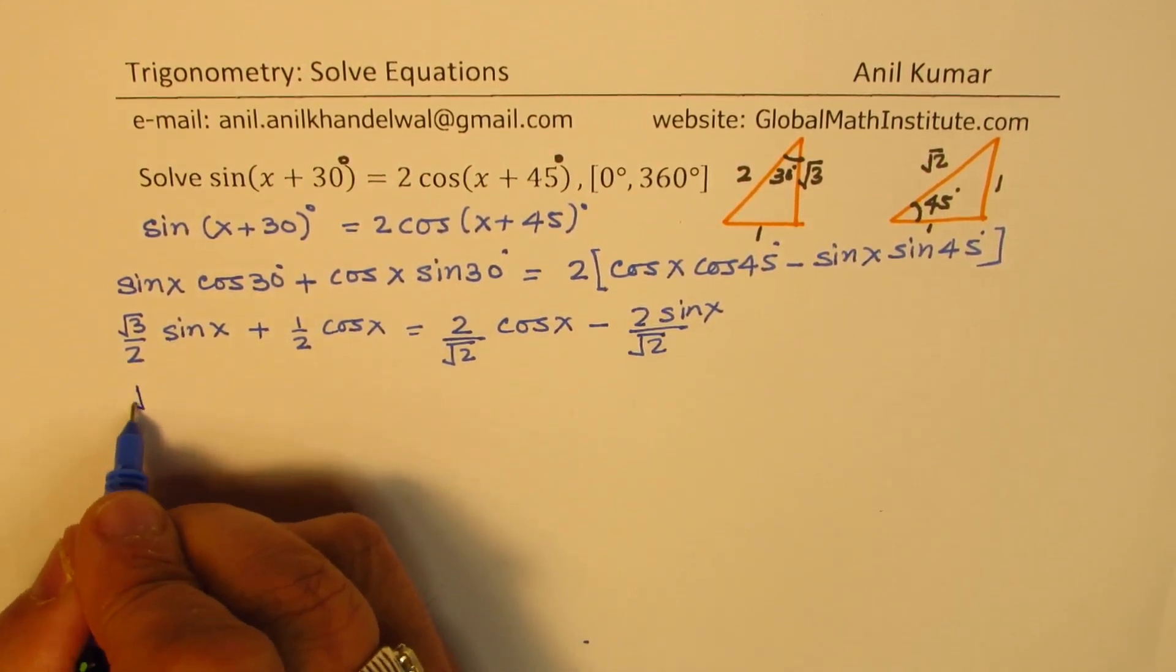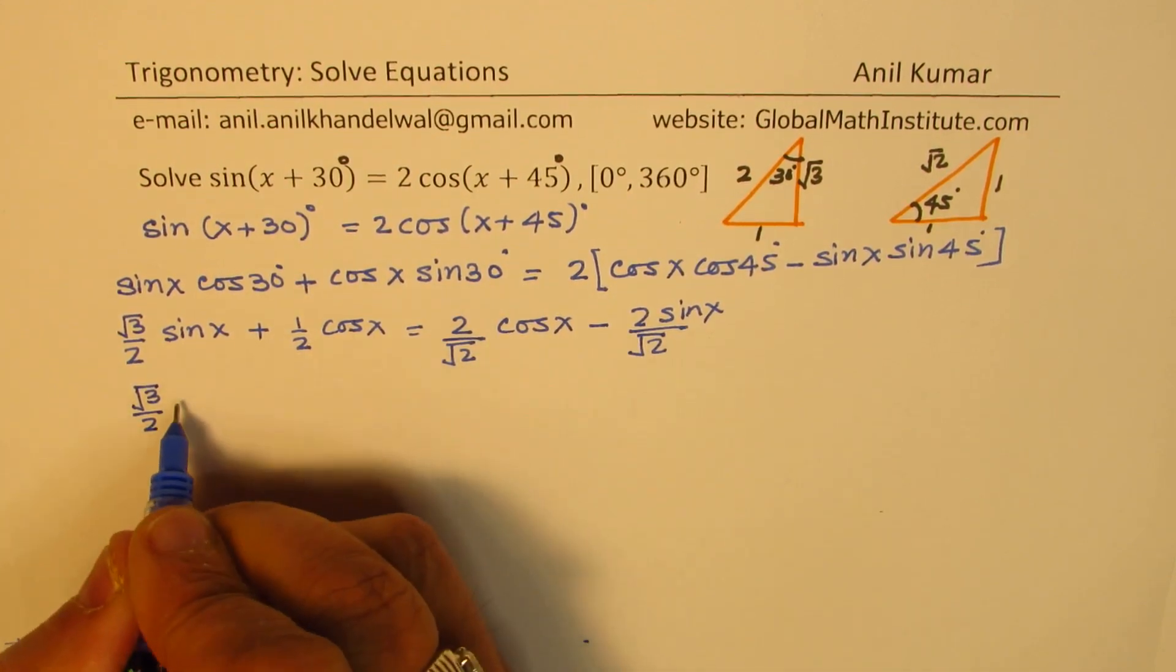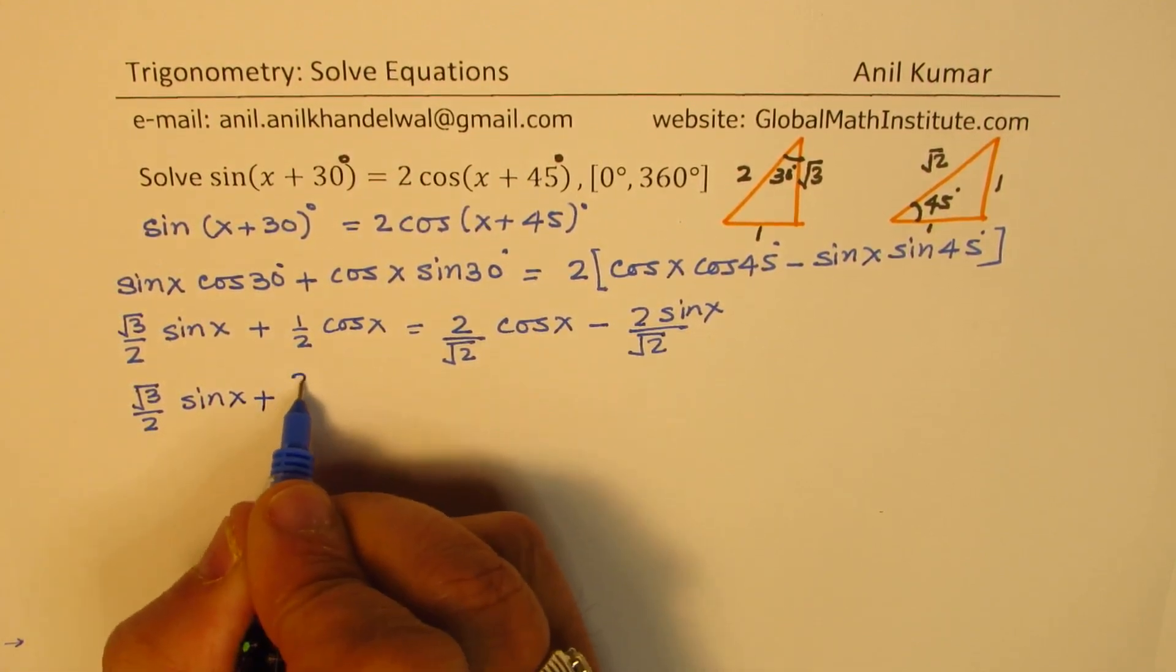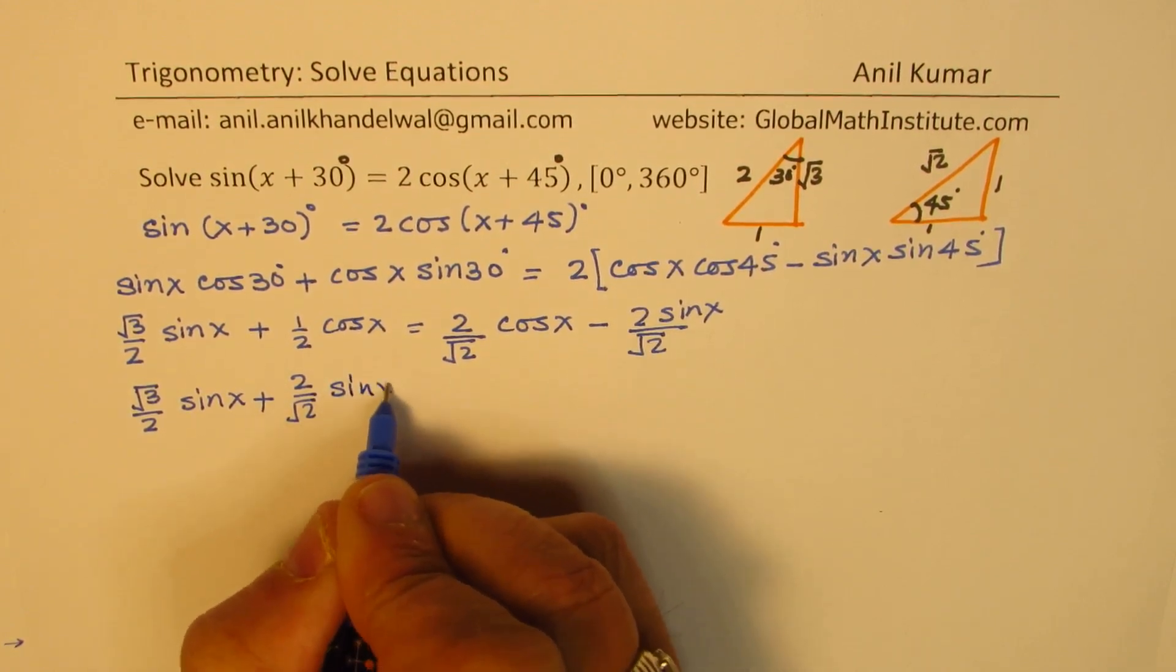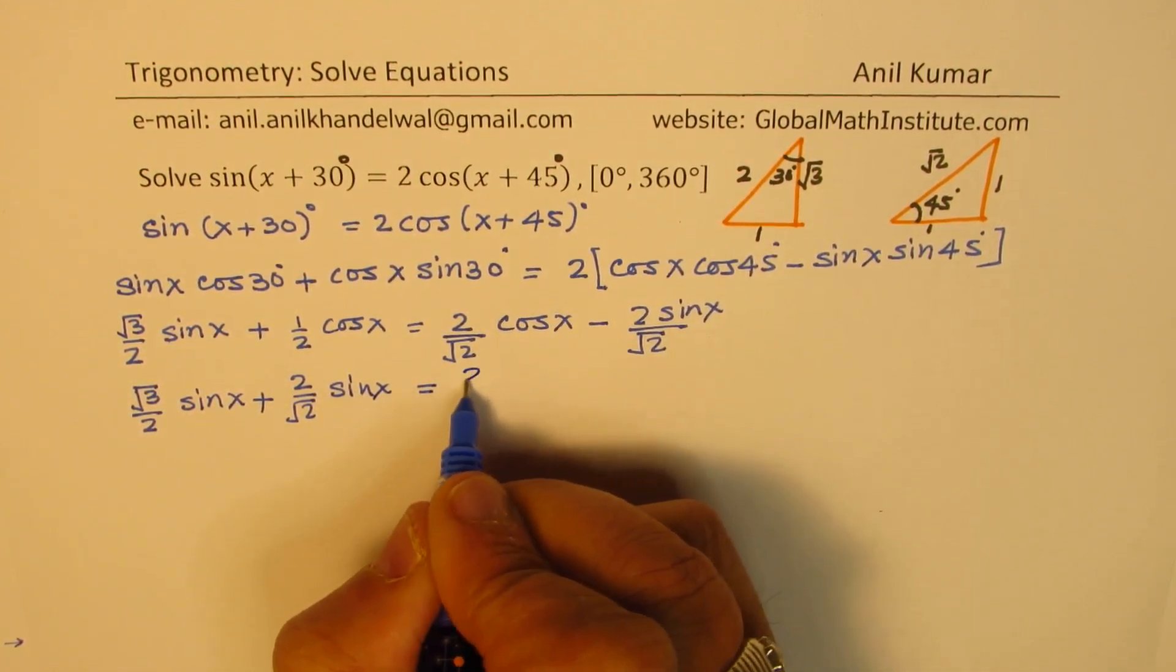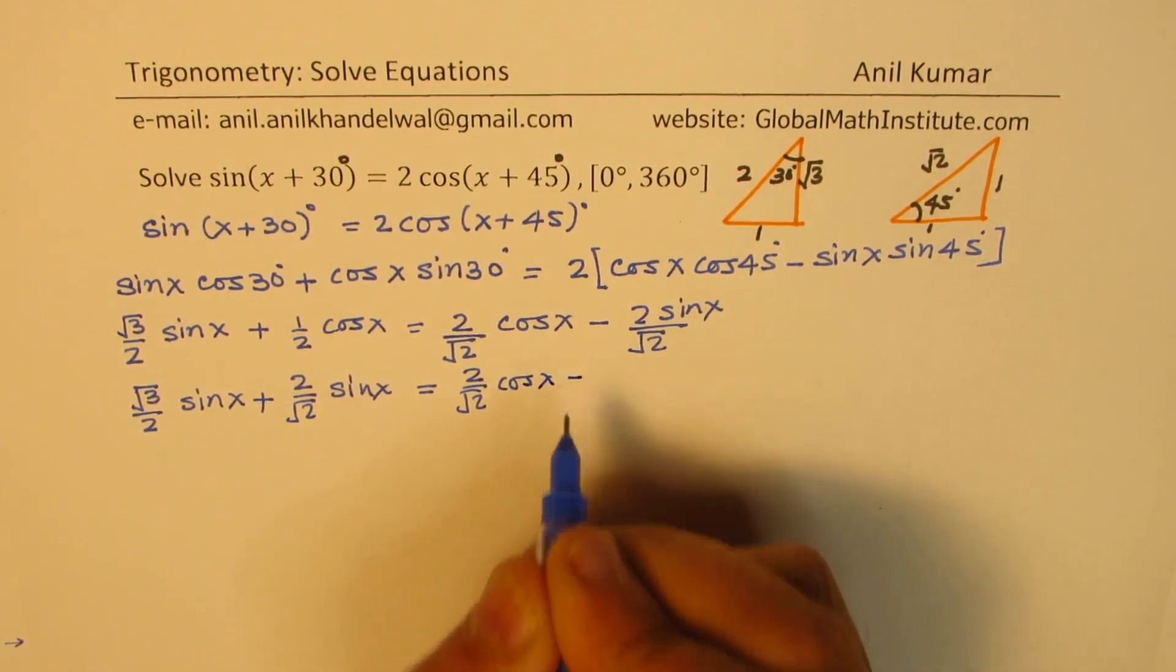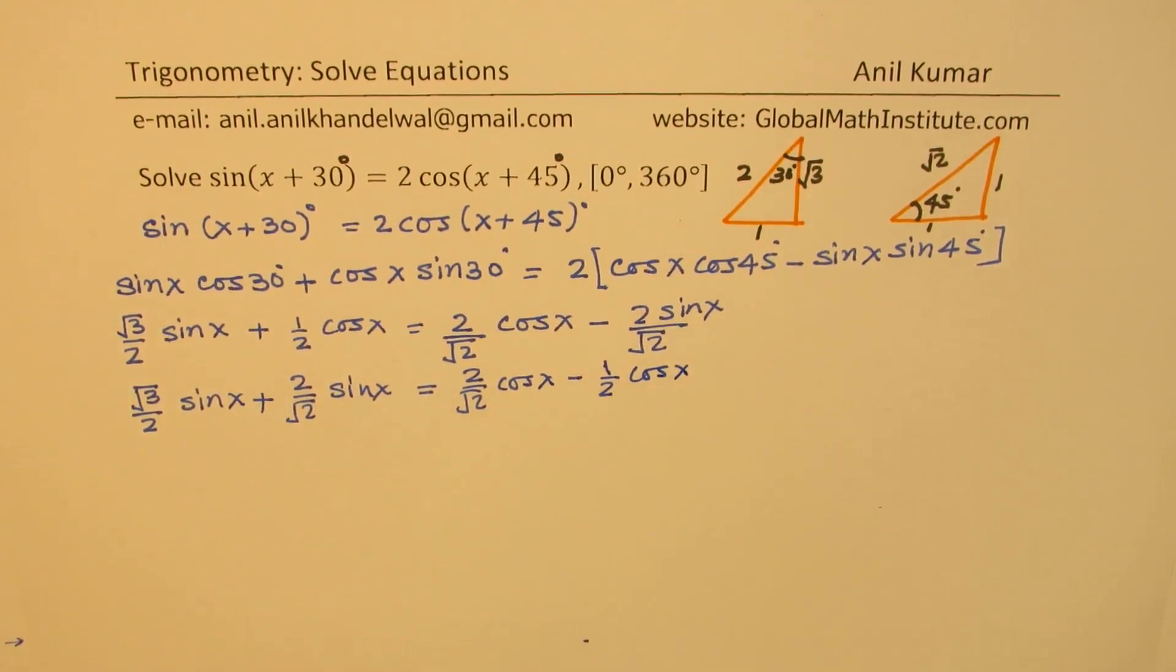So we have (√3/2)sin x, we can take sine x common. Let me write down like this: (√3/2)sin x + (2/√2)sin x equals to (2/√2)cos x - (1/2)cos x.